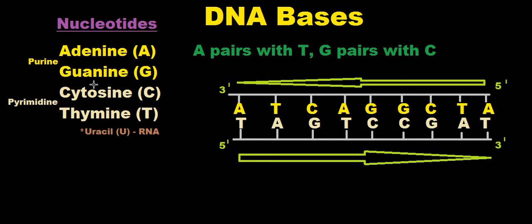The larger purines are adenine and guanine, and the smaller pyrimidines are cytosine and thymine. Thymine gets switched out for uracil when we're talking about an RNA strand.